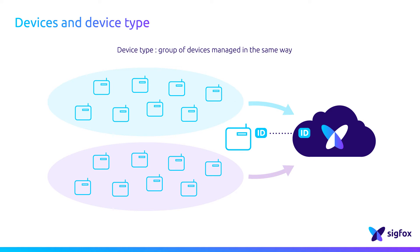To register a device, two key elements are necessary: its unique ID and its porting authorization code. The PAC is a title of ownership of the device.